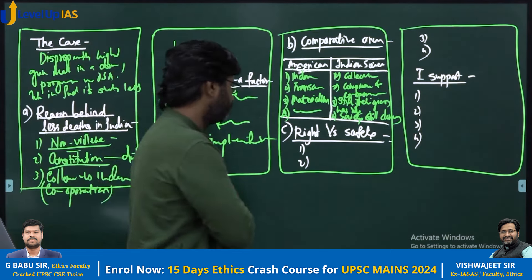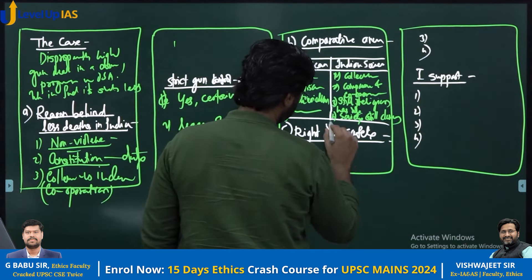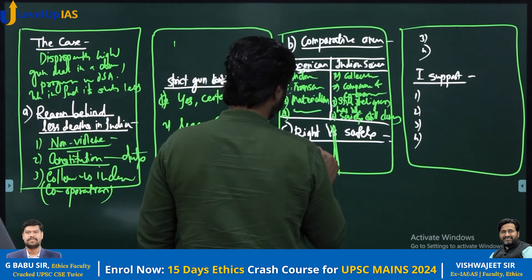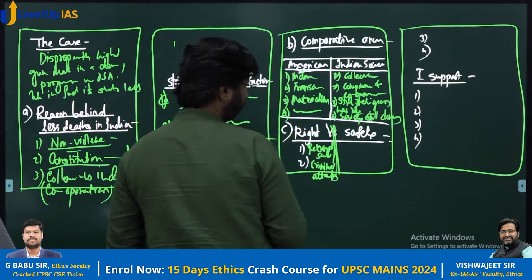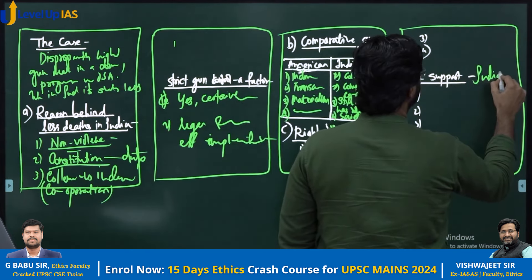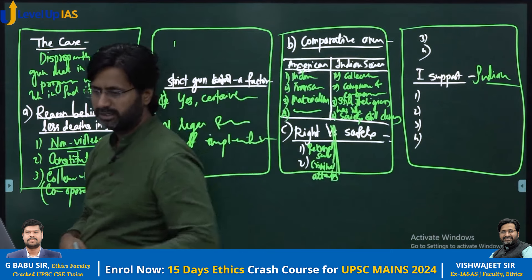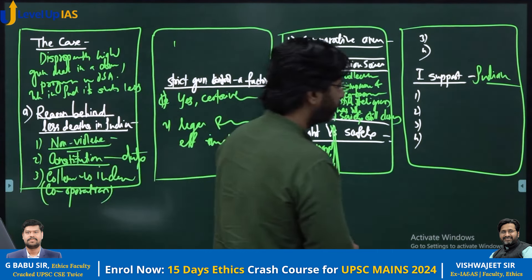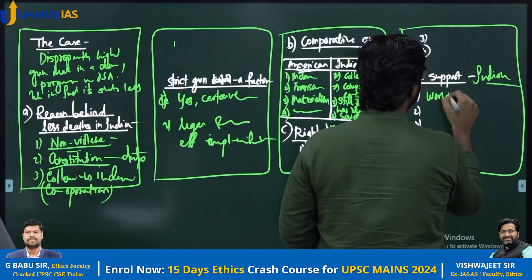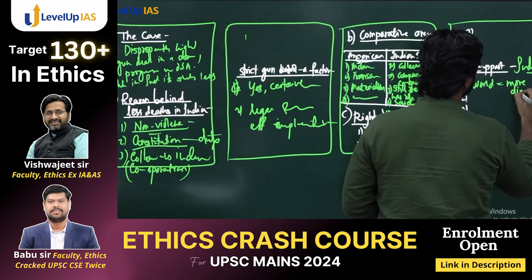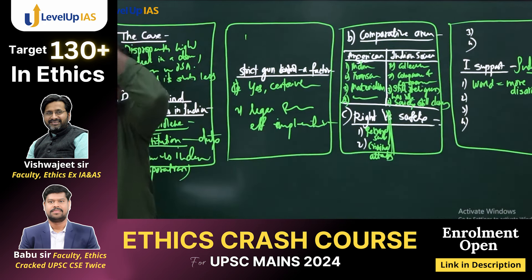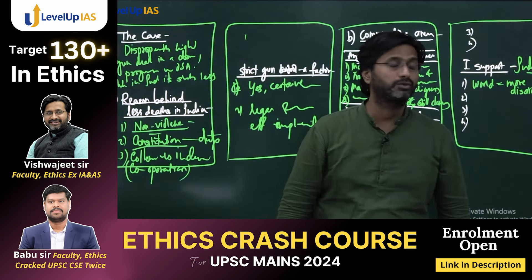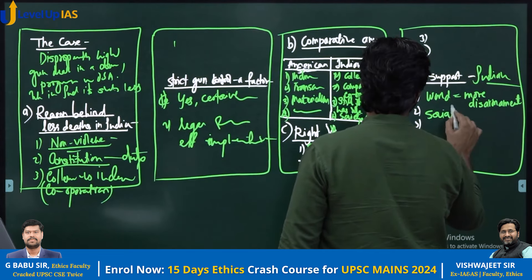Now on the right to bear arms and safety: the argument for the right to bear arms includes personal safety, defense against criminal attacks, and defense purposes. But I support the Indian model, obviously. As a world, we are also trying for more and more disarmament — because disarmament means there are still chances of agreement, collaboration, and social contract. This shows there is still possibility of social contract, and that is how ethics works.